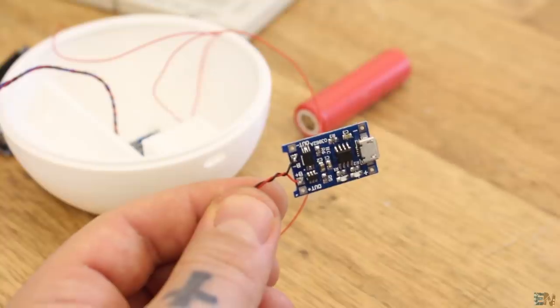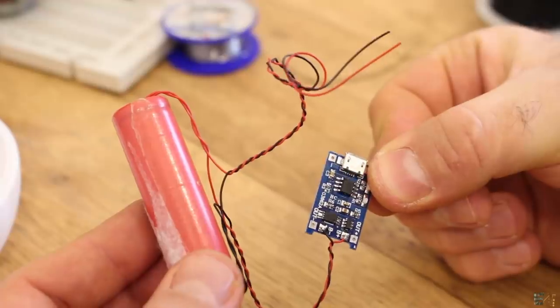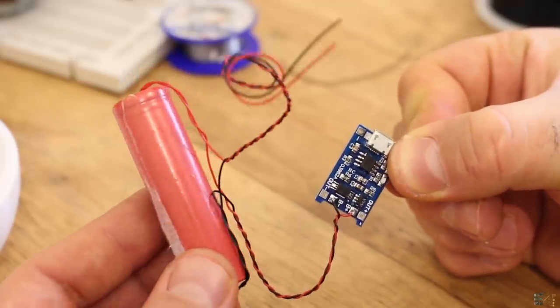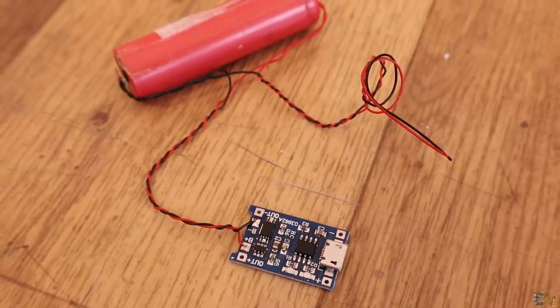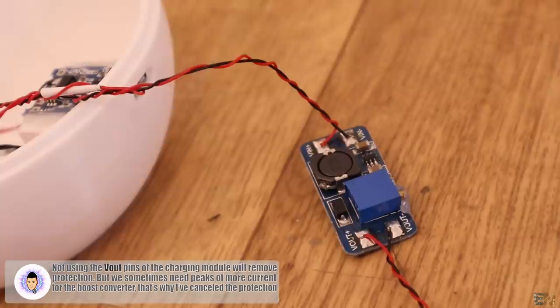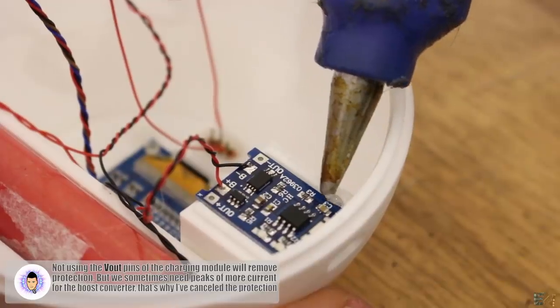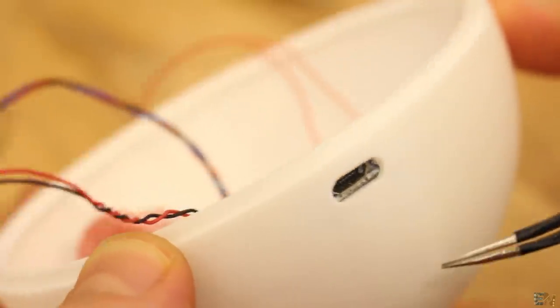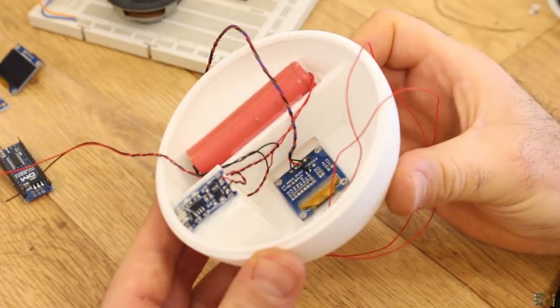I now solder wires to the USB charging module. Then I connect it to the battery like this: from the battery out pins of the module to the battery, and then 2 more wires from the battery as well. In this way we bypass the current limit protection so we have enough current for the boost converter. Now I can glue this module just here in front of the hole so we can insert the USB connector to charge the battery. Then I also glue in place the battery on the support as well.